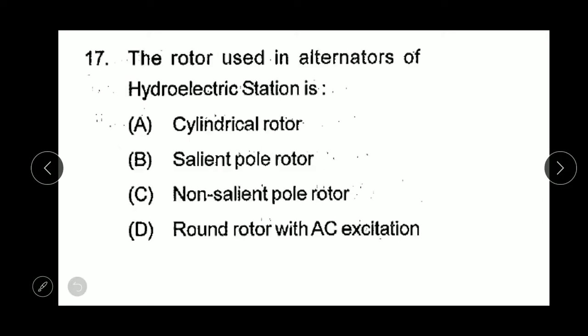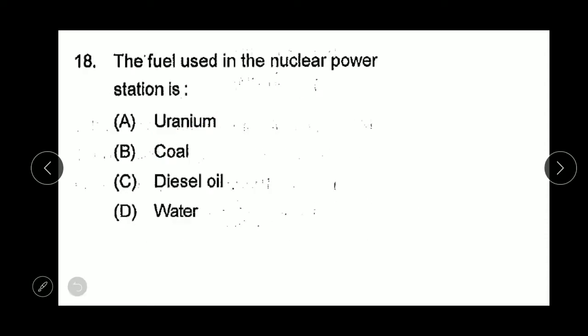Question 17: The rotor used in alternator of hydroelectric station is cylindrical rotor, salient type rotor, non-salient pole rotor, or round rotor with AC excitation? This is salient type of rotor. The fuel used in nuclear power station is uranium.